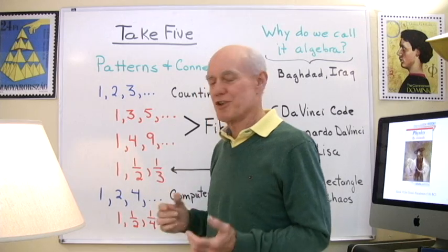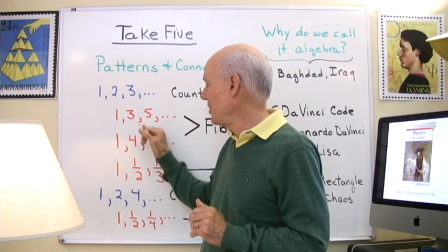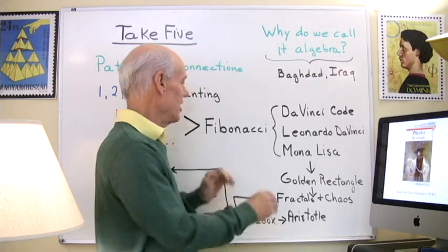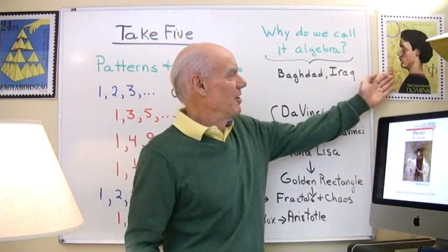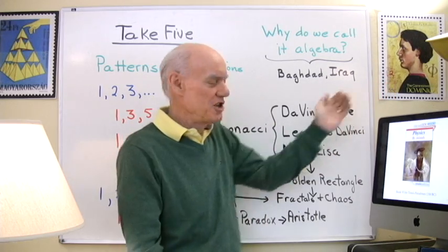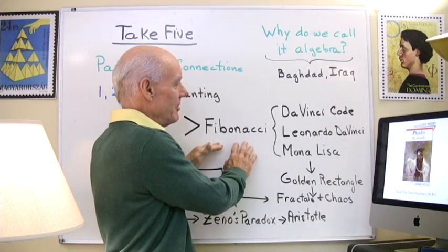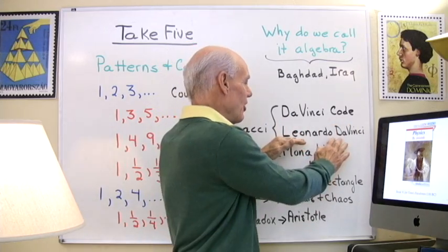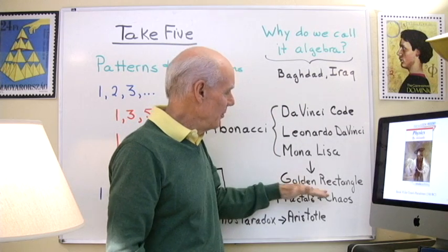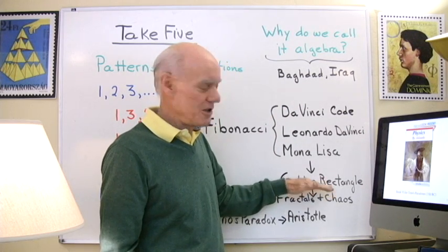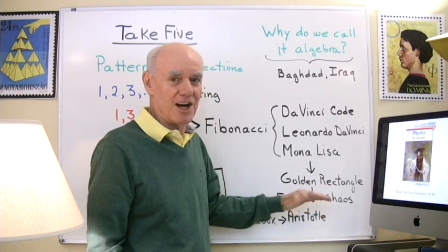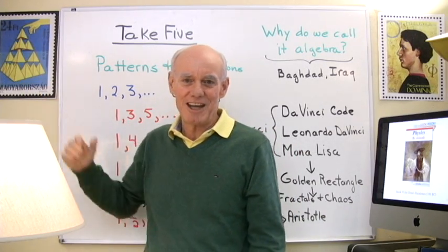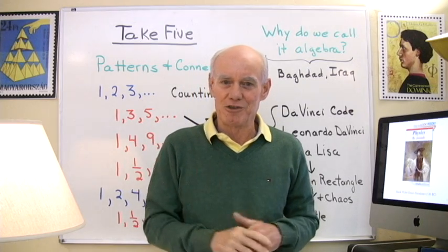It turns out there's a great little relationship between these two sequences of numbers, and that's the first thing we're going to look at. That is going to connect us with the mathematician Fibonacci — here's a little picture of Fibonacci on a postage stamp. From Fibonacci we're going to connect to the Da Vinci Code, both the book and the movie, Leonardo Da Vinci and the Mona Lisa. From there we can connect to golden rectangles and from there to fractals and chaos. Here's a postage stamp with a fractal on it, and I think when we get to that part of the course you're really going to like the fractals and chaos part.